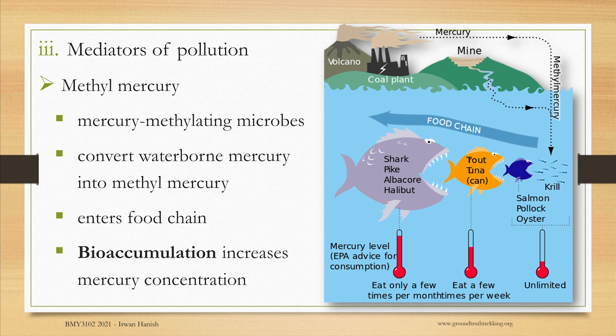The methylmercury gets absorbed by plants, which get eaten by tiny fish, which get eaten by small fish, which get eaten by large fish. So the poison accumulates — this is called bioaccumulation. When you eat the fish, you can get neurological poisoning, such as loss of physical coordination, blindness, and even death.